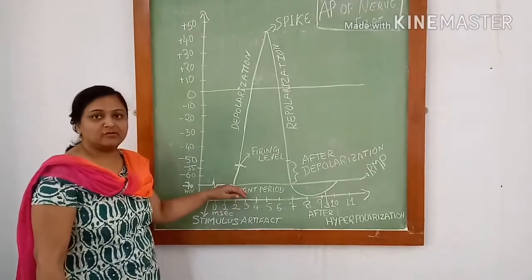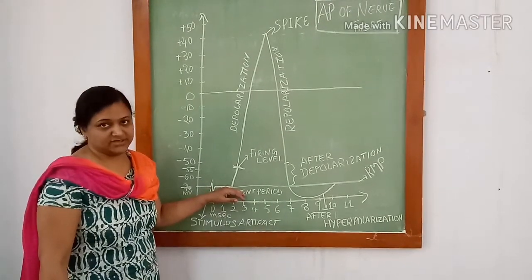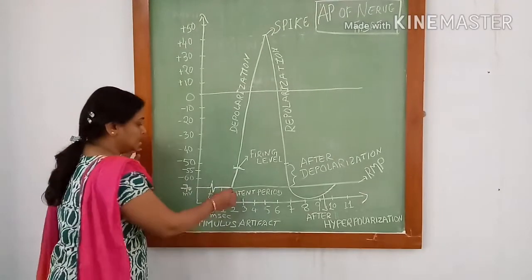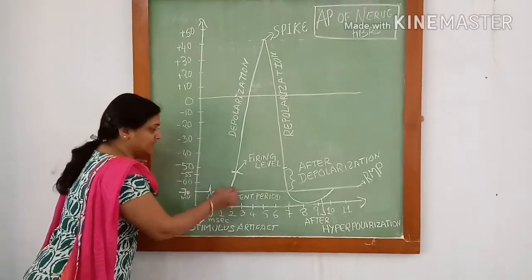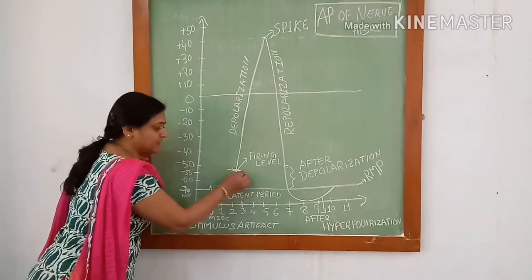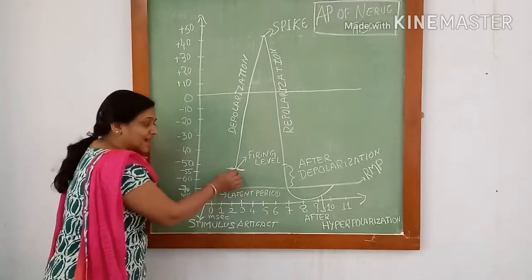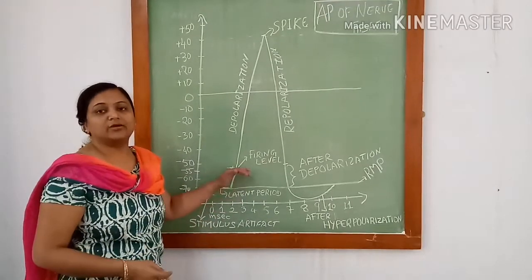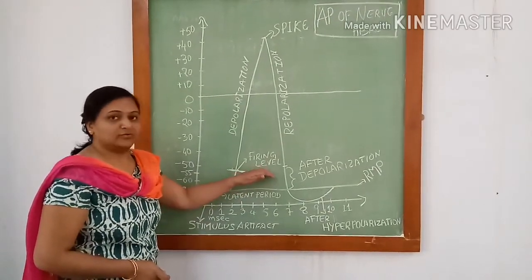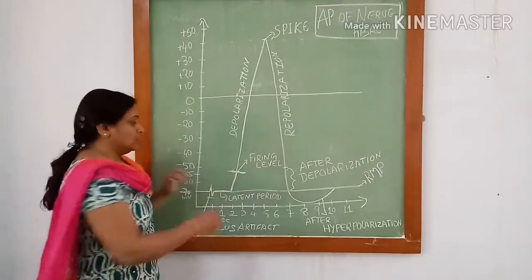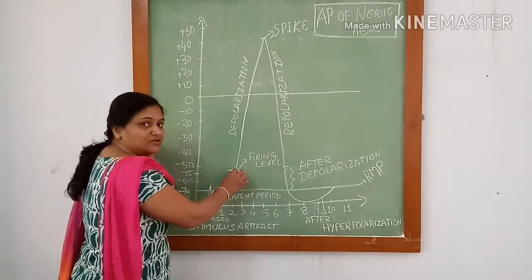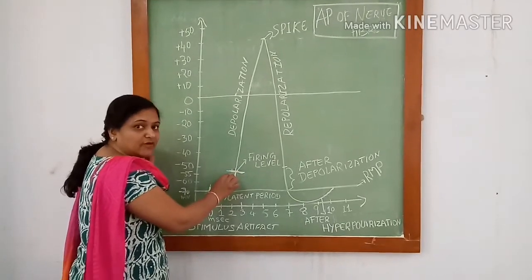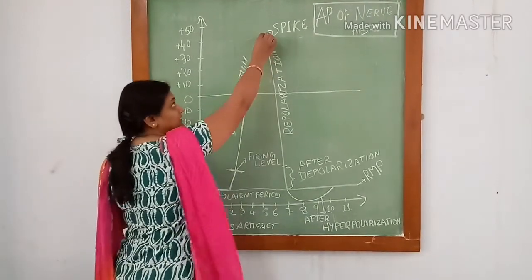During depolarization, there is opening up of sodium channels. Due to opening up of sodium channels, the resting membrane potential changes and reaches to minus 55 mV. At this level, there is more and more opening up of sodium channels. This level is known as firing level. Opening up of sodium channels leads to a rapid change in potential from minus 55 mV up to plus 35 mV.